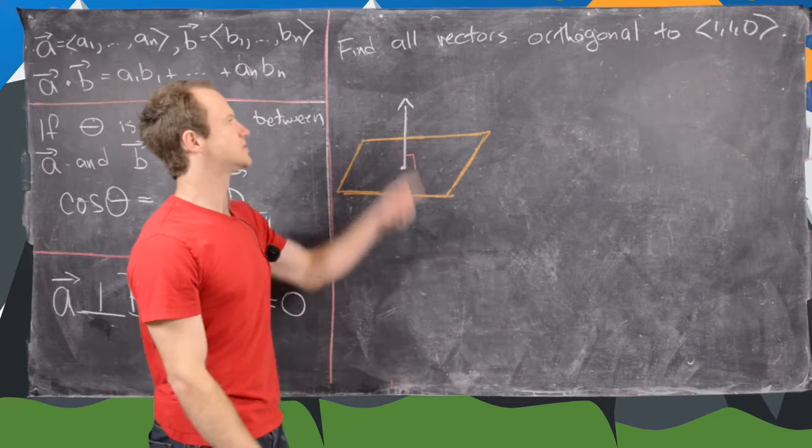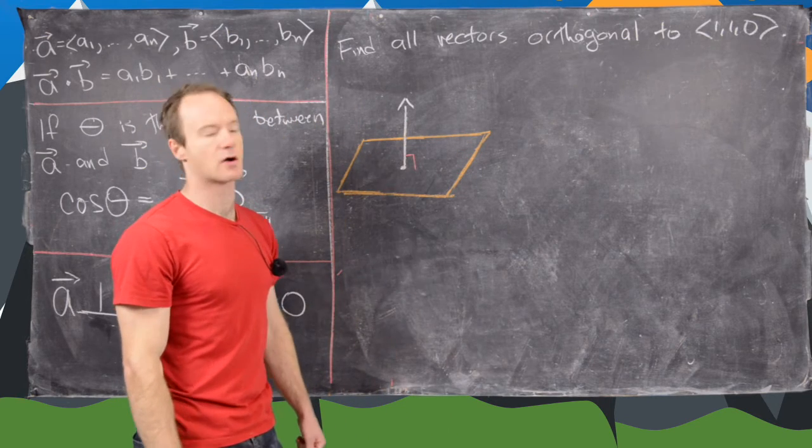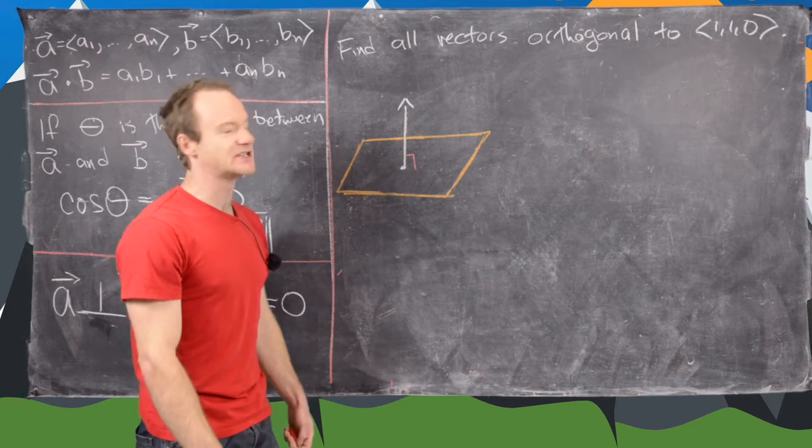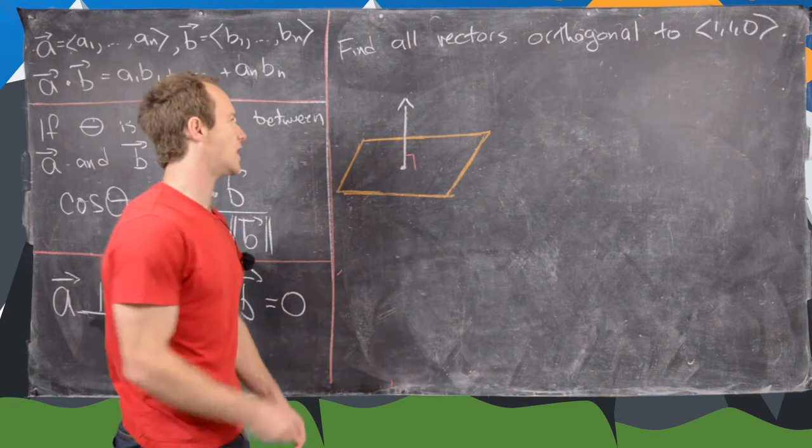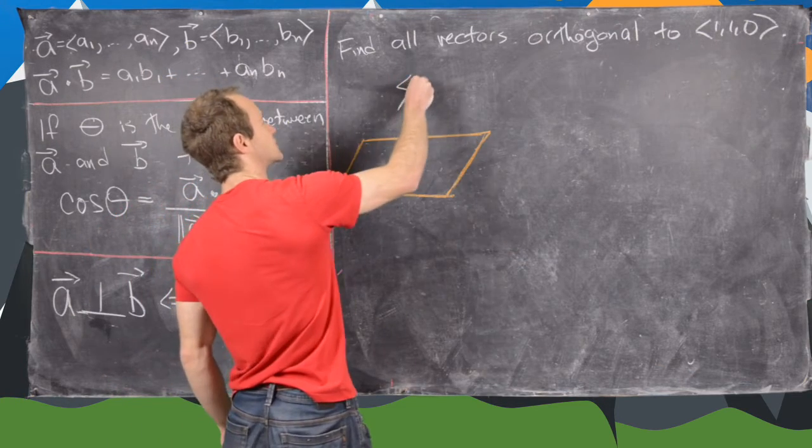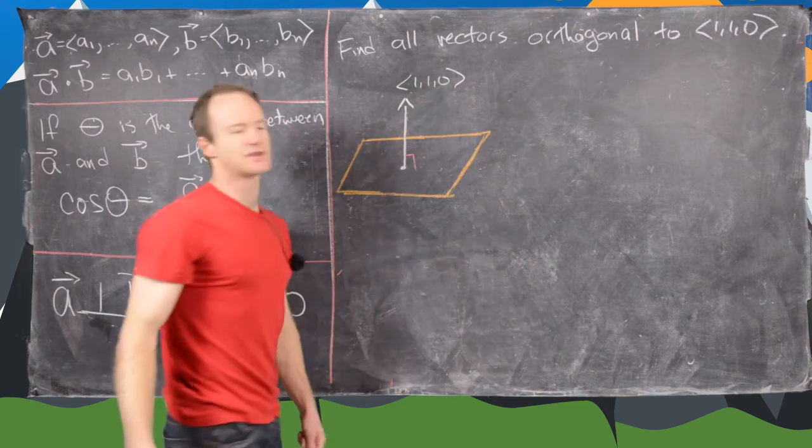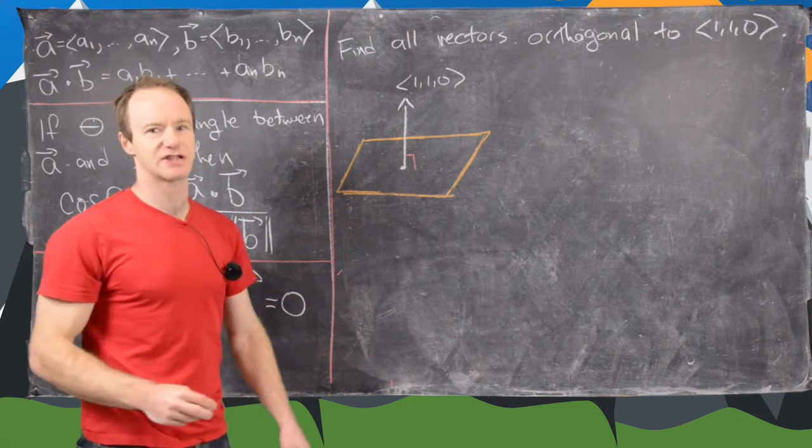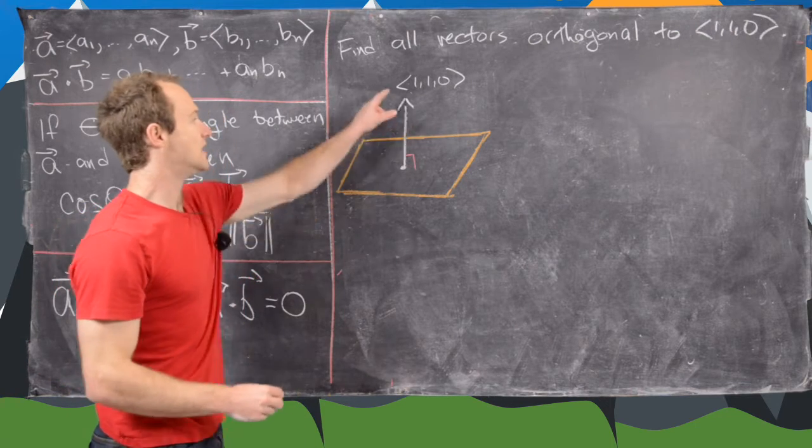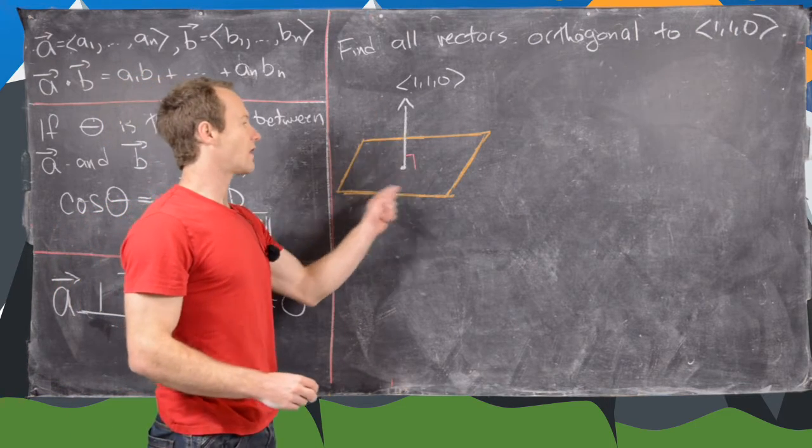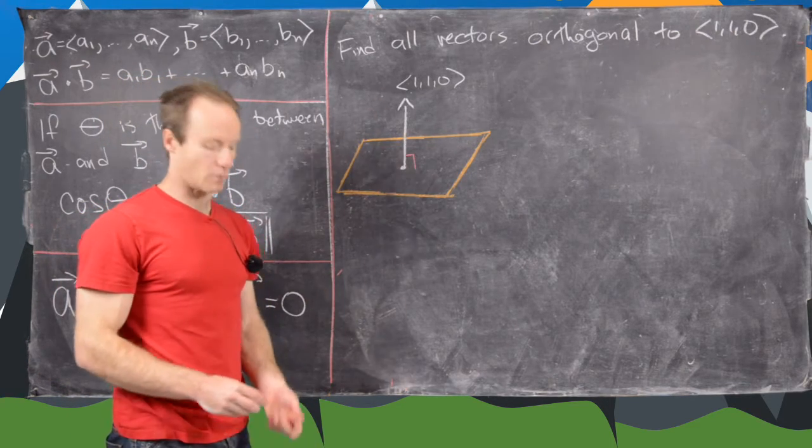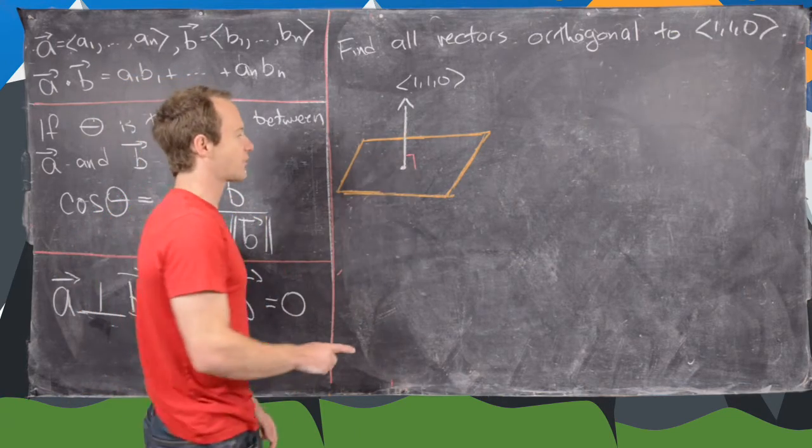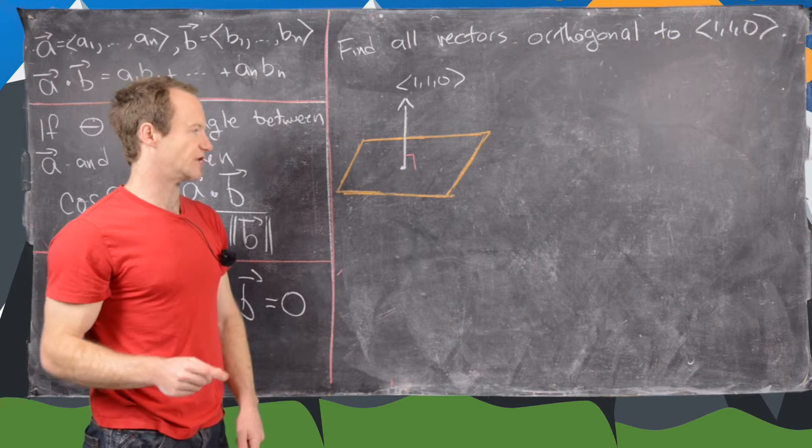So now moving into three dimensions, we want to find all vectors that are orthogonal to 1, 1, 0. So I've done a little sketch up here to kind of see what's going on. So let's assume that this vector is 1, 1, 0. So notice it may not be pointing in that direction depending on how you look at the coordinate axes, but this is just a sketch. And notice that there are lots of vectors that are orthogonal to 1, 1, 0. And in fact, they form a plane in three-dimensional space, which I've drawn in orange here.